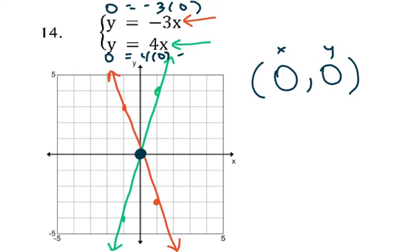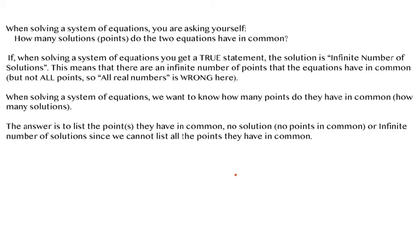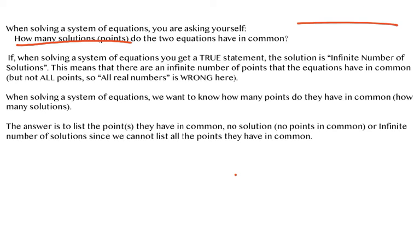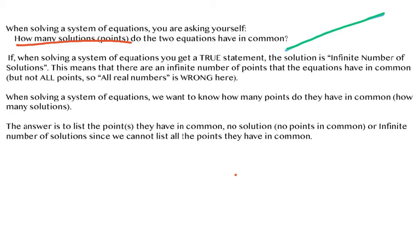You can check systems of equations, and that's something we're going to keep bringing up. When solving a system of equations, you're asking how many solutions or points do the two equations have in common. Two lines can intersect at one point at most — they can't curve around and intersect again, because then they wouldn't be lines. It's possible to have two parallel lines that never intersect — that's no solution. You can also have two equations that graph the same line — that's an infinite number of solutions. A true statement as a system means the lines are coincident: infinite number of solutions, not all real numbers.